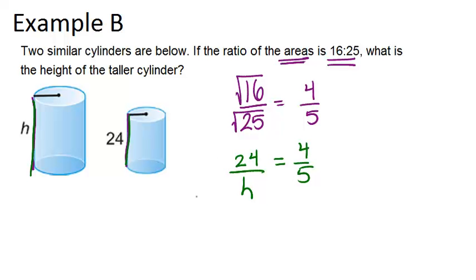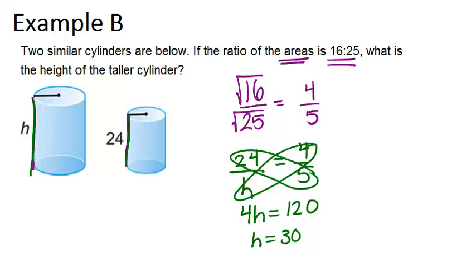We end up getting 4h equals 120, which means that h equals 30. So the height of the taller cylinder is 30 units.